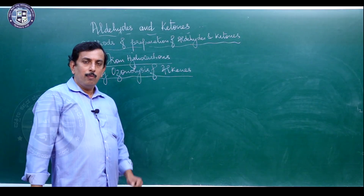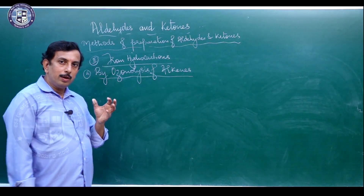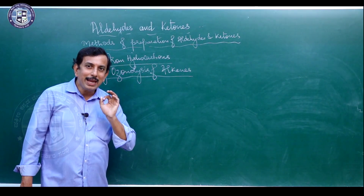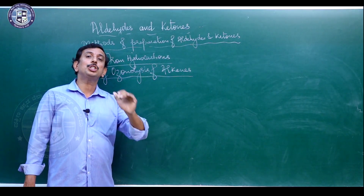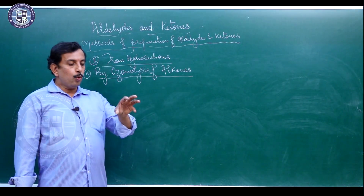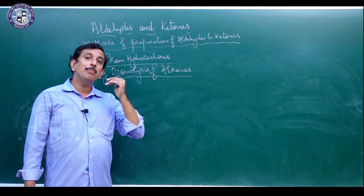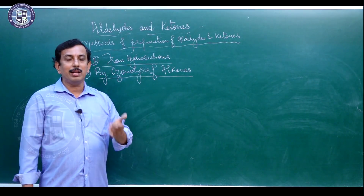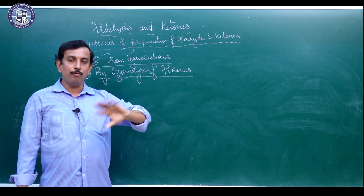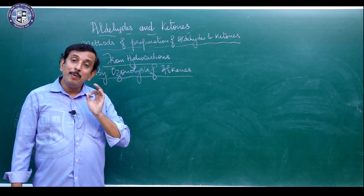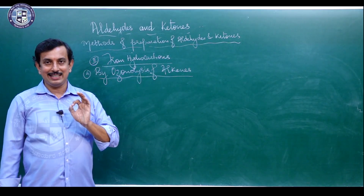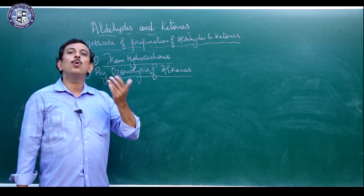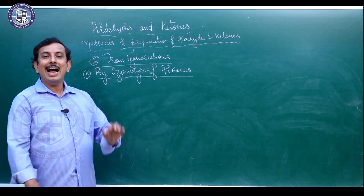Ozonolysis uses ozone (O₃), which adds across the double bond of an alkene to form a product called an ozonoid. The main purpose is to identify the position of the double bond. The ozonoid is then reductively cleaved using zinc in aqueous medium — this is called reductive ozonolysis, where oxygen is removed from the ozone intermediate.